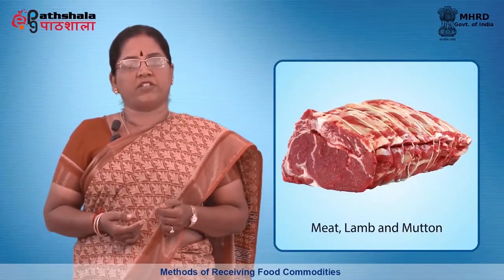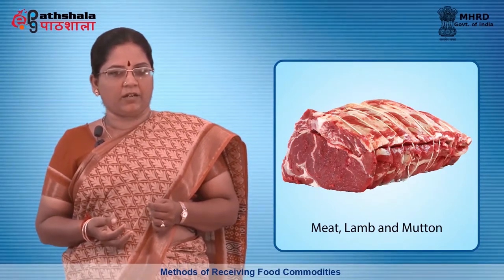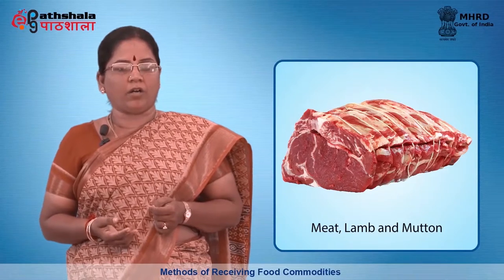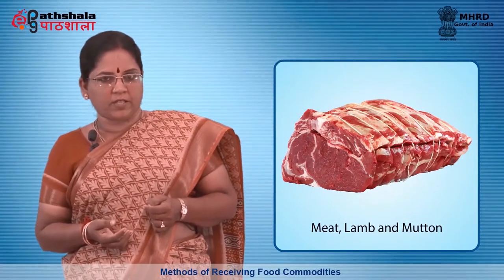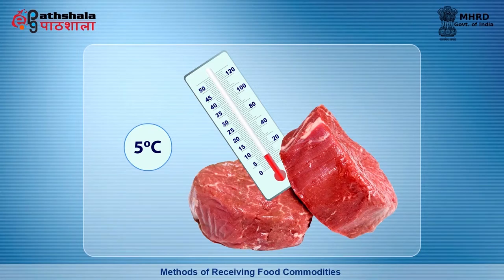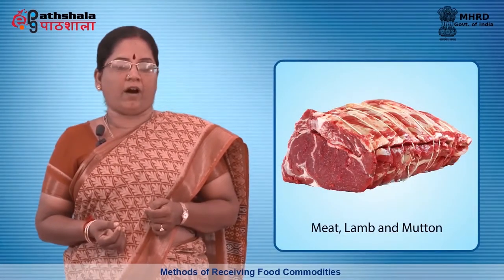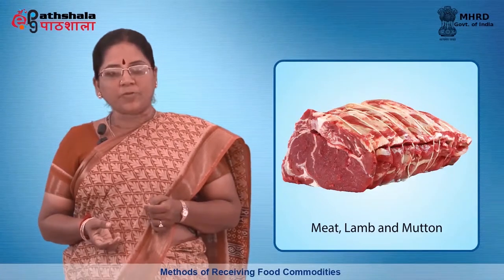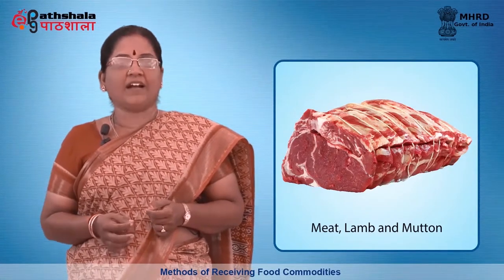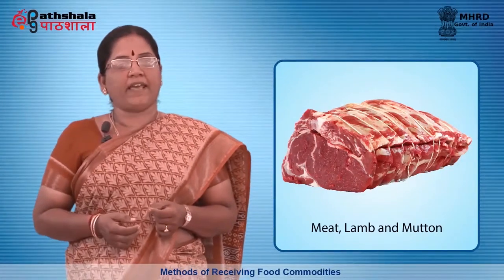The criteria for accepting or rejecting different food items will be seen group by group. The first is meat, lamb and mutton. In food service institutions, meat may be purchased in one of the following forms: in the carcass, by the quarter, wholesale cut, or in ready-to-serve portions. Meat and meat products should be delivered at a temperature of 41 degrees Fahrenheit or 5 degrees Celsius or colder. Meat should be obtained from an approved source. The flesh should be bright pink in colour and should not have any bad odour. The packaging should be clean and in good condition.